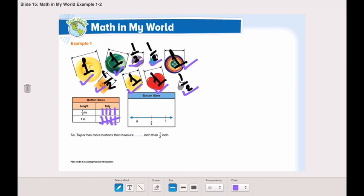Now let's add these on our line plot. How many half inch? One, two, three, four. How many one inch? One, two, three, four, five. So Taylor has more buttons that measure one inch than half inch.